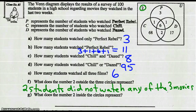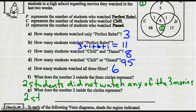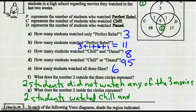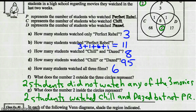And Part G: what does the number 2 inside the circles represent — specifically that number 2 right there? That would represent the fact that two students watched Chill and Dazed — the intersection of Chill and Dazed — but not Perfect Rebel.